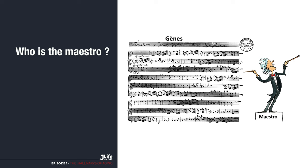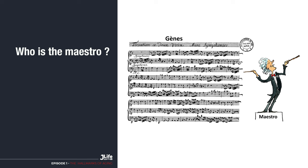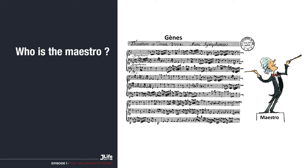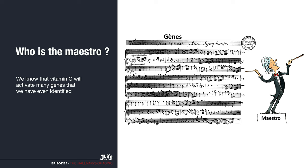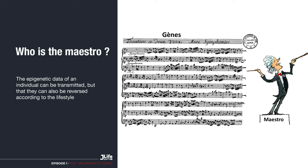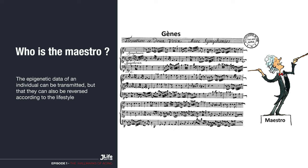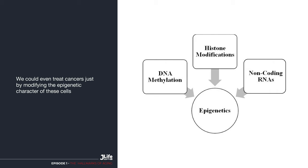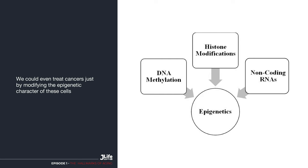For the moment, what we have is only observational data. For instance, we know that vitamin C will activate many genes that we have even identified. We know that the epigenetic data of an individual can be transmitted to their descendants, but that it can also be reversed according to lifestyle. We could even treat cancers without having to kill innocent cells, but just by modifying the epigenetic character of the cells.